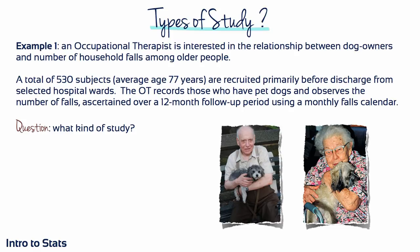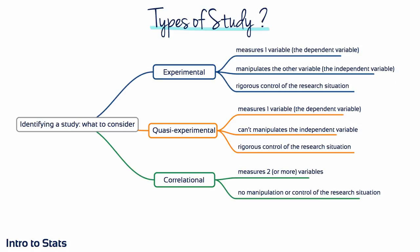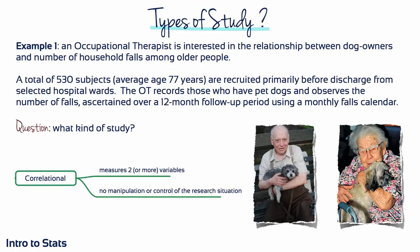Let's go through some examples to practice identifying the type of study. Example 1: An occupational therapist is interested in the relationship between dog ownership and household falls among older people. A total of 530 subjects with an average age of 77 years are recruited before discharge from hospital wards. The OT records who has pet dogs and observes the number of falls over a 12-month follow-up period. The OT is measuring two variables — dog ownership and number of falls — with no manipulation or control. This is a correlational study.